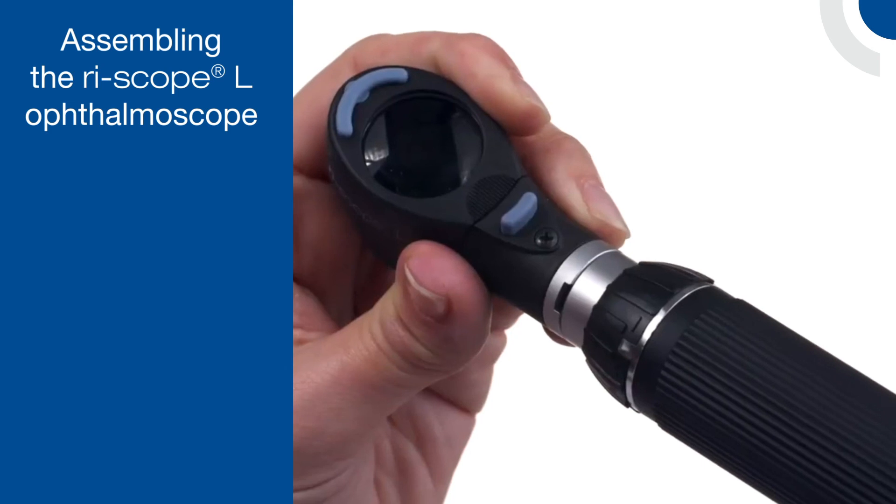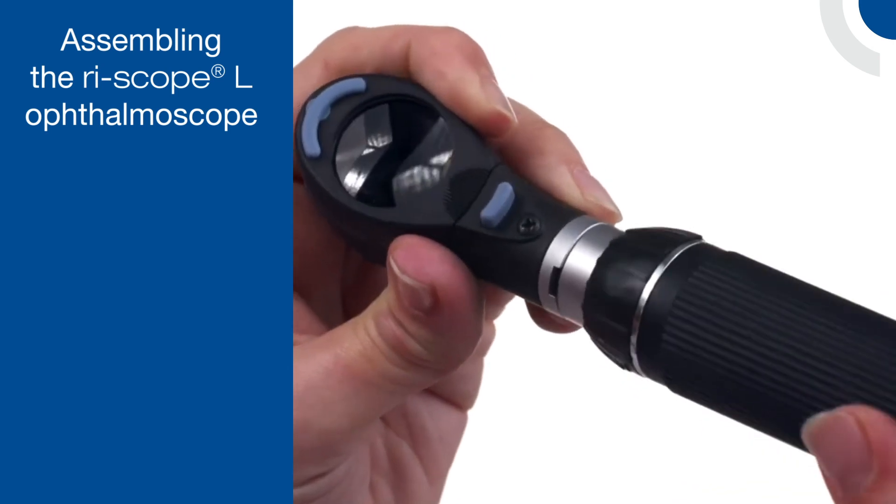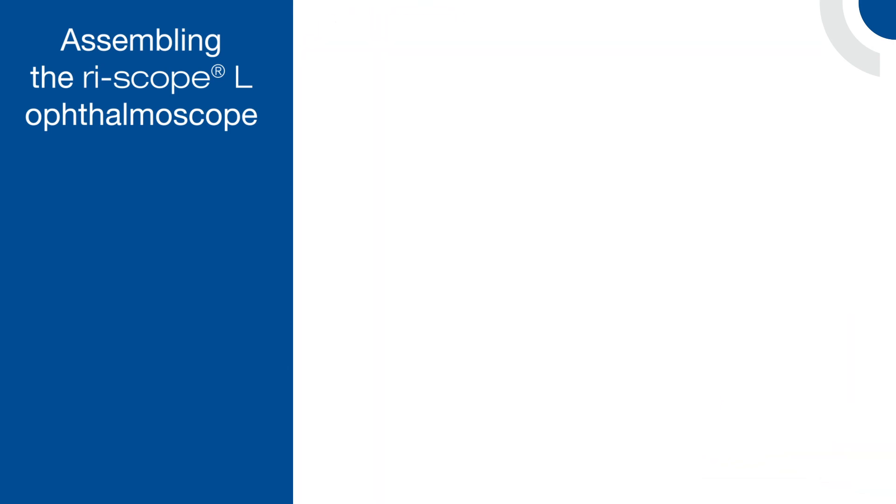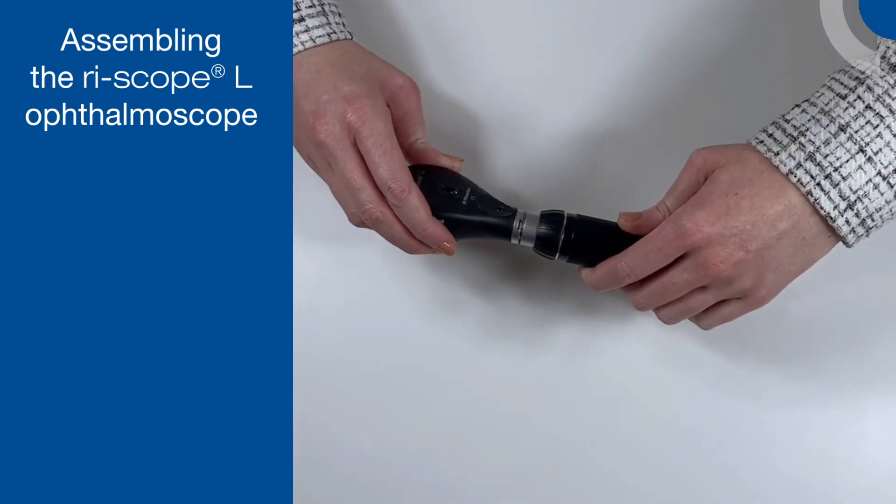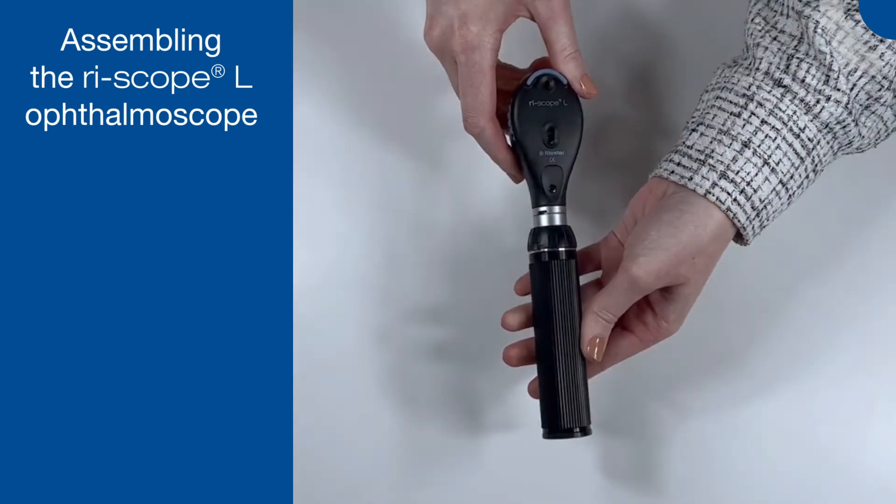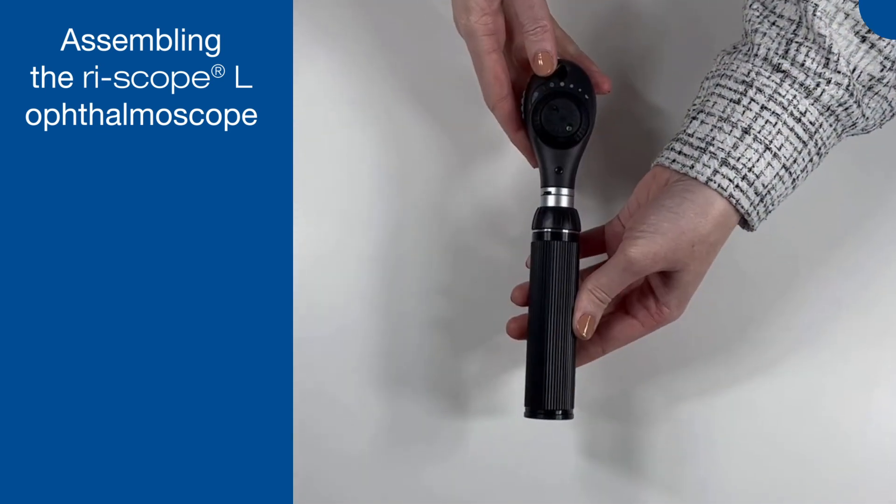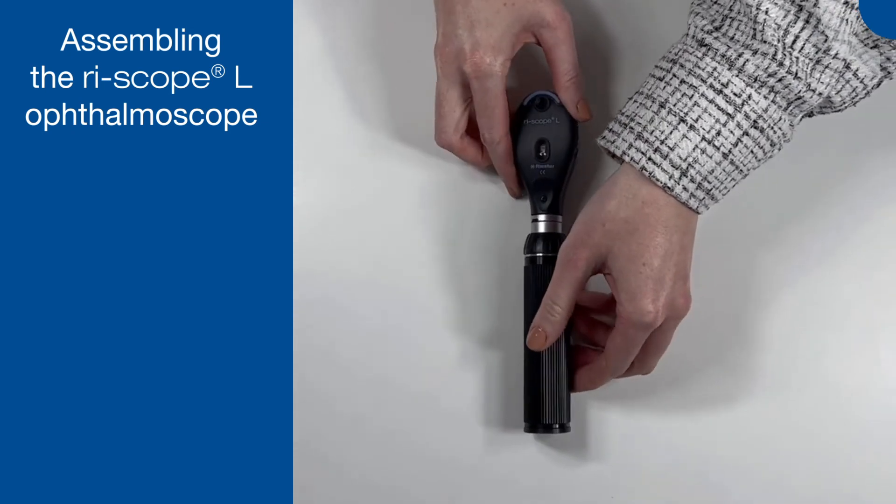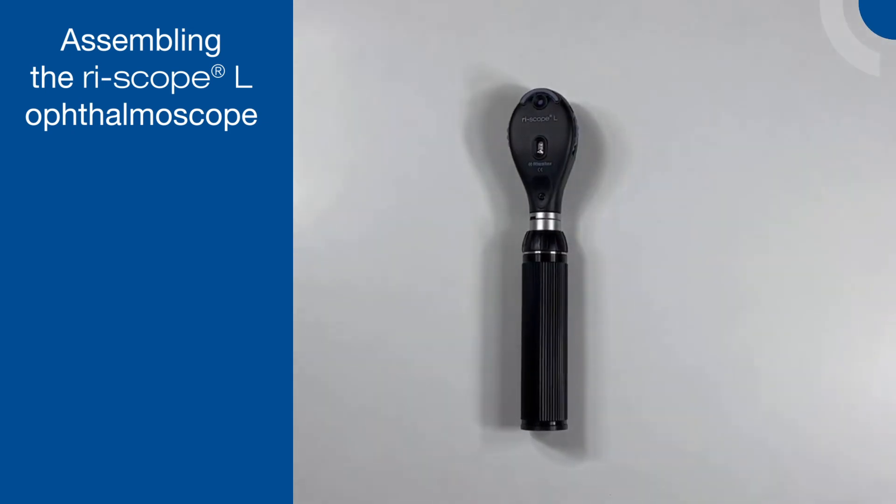With the lithium-ion battery already installed in the handle, attach the Rescope L2 LED ophthalmoscope head the same way as the Rescope L3 otoscope head. Again, you will hear an audible click confirming it is secure. The ophthalmoscope is now ready to use.